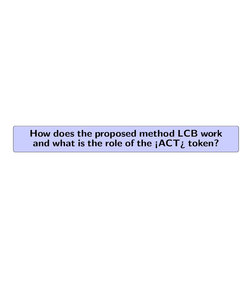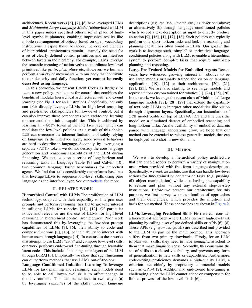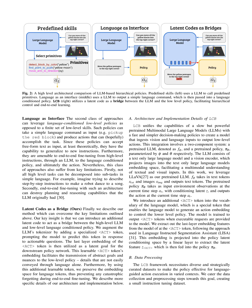The proposed method LCB works by integrating a pre-trained multimodal large language model (LLM) with a pre-trained policy to enable robots to perform manipulation tasks guided by free-form language descriptions. LCB consists of two main components: the pre-trained LLM F-FI and the pre-trained policy Pi-Theta. The LLM processes text tokens and images to output text tokens, while the policy takes environment observations and a latent conditioning variable to produce actions. The key innovation of LCB is the introduction of a specialized <ACT> token into the LLM's vocabulary.